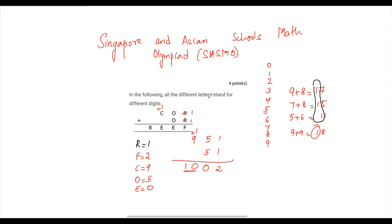That is how we attempt these questions. The basic starting point is knowing whether there is a digit in the hundreds place and whether there is a carryover. Whenever two digits are added, the carryover will always be 1 — it cannot be any other number.